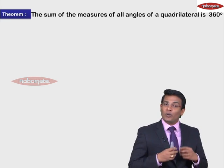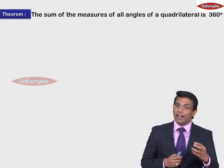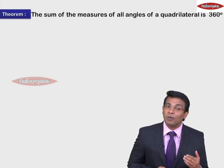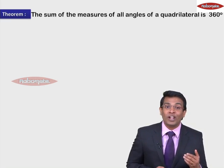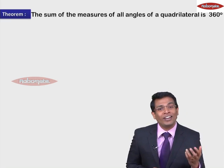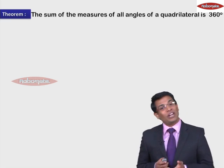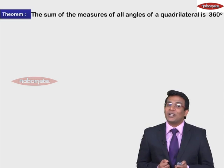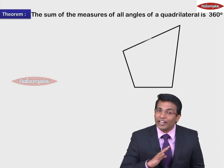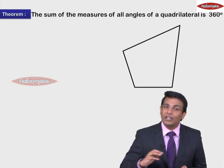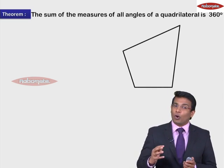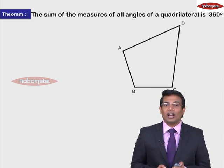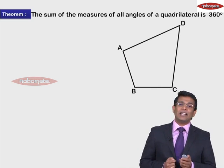The moment you have a statement, the first thing is you need to draw a figure. It says sum of the measures of all angles of a quadrilateral, so first we need to have a quadrilateral. Let's draw a quadrilateral — it's any four-sided closed figure. You have a quadrilateral, you need to name it. So let's name the quadrilateral as A, B, C, D.